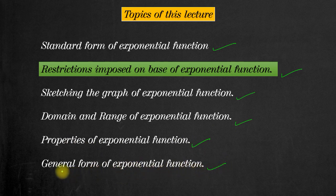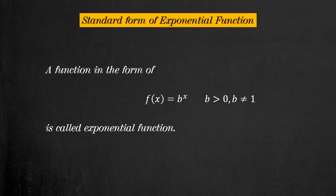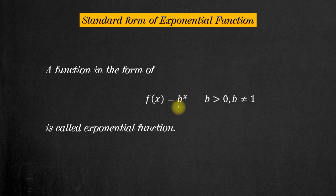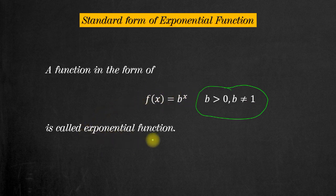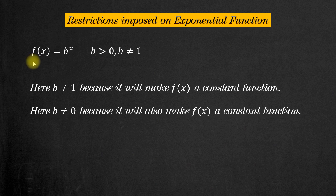Let's start by defining the standard form. A function in the form f(x) = b^x is called the standard form of an exponential function. Here, b is the base and x is the exponent. b is a constant, and we impose restrictions on it — this is the main concept of this topic. b must be greater than zero and not equal to one. If these conditions are met, we call it an exponential function.